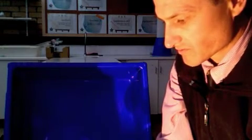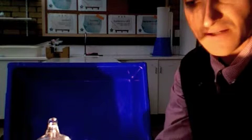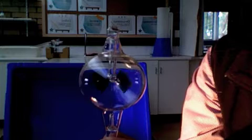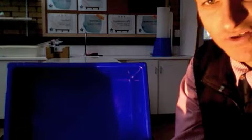The Crookes Radiometer responds to strong light. So if I hold it in front of this light, the black side is pushing it forward. You'll see the silver side coming towards and the black side receding away. So it seems to be absorbing strong light and the black side seems to be able to push the radiometer away.